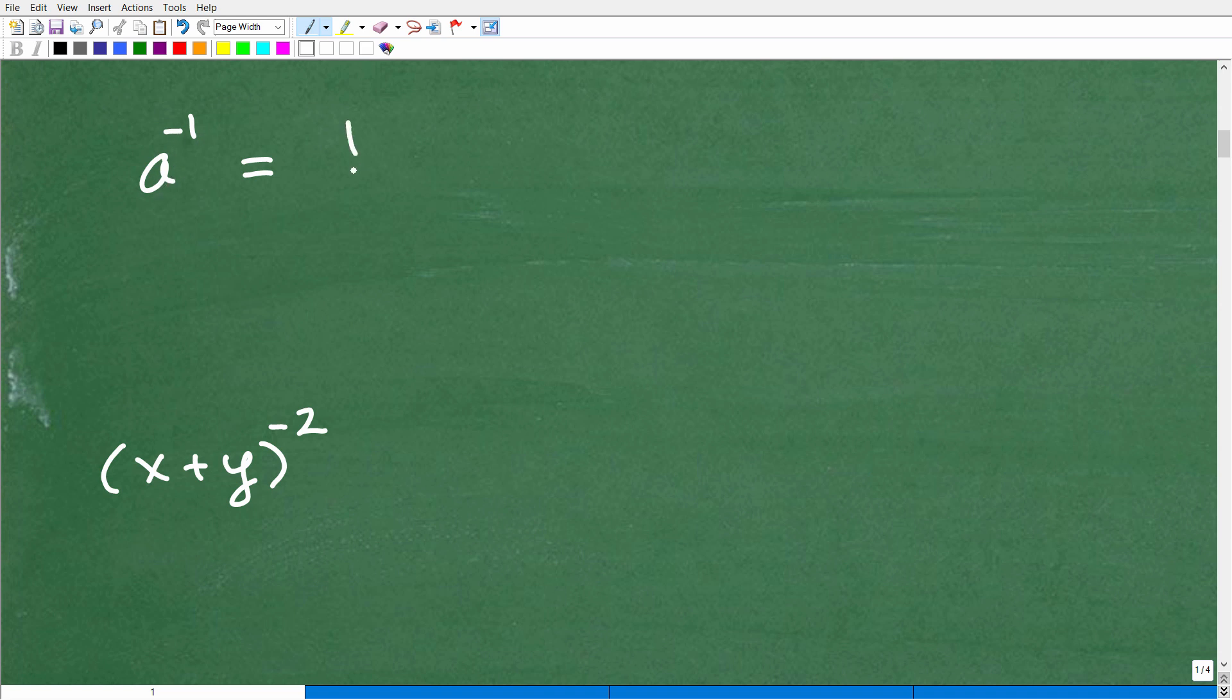So a to the negative 1 is equal to 1 over a to the first, okay? Or just 1 over a. Again, our property is a to the negative n is equal to 1 over a to the n. All right, so pretty straightforward stuff. Let's move on here.